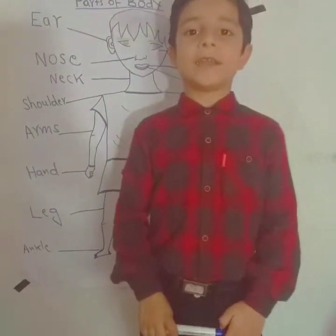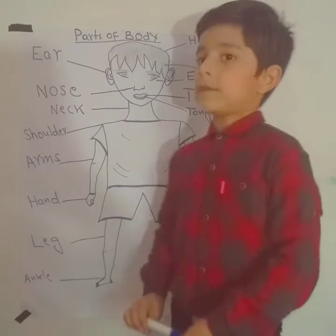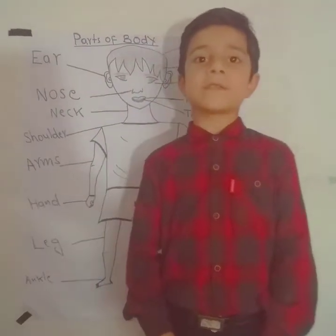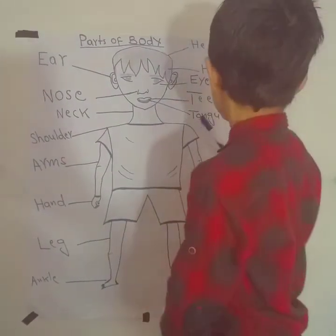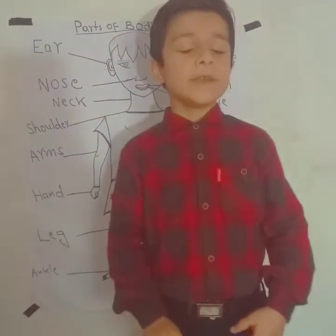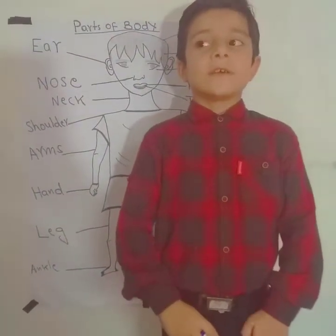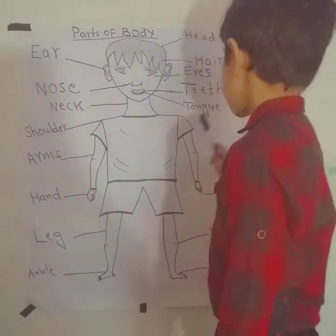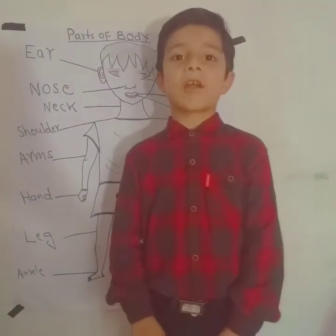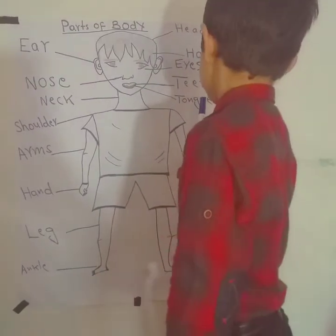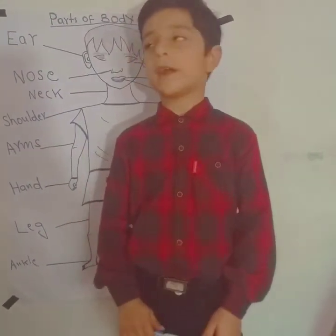Head — head contains brain. Hair — hair gives protection to the head. Eyes — we can see things with our eyes. Teeth — we can crush food with our teeth. Tongue — we can taste food with our tongue.